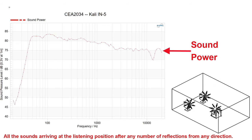The next line in the graphic is sound power. Sound power is all the sound radiated from the speaker in every single direction — 360 degrees horizontally around the speaker and 360 degrees above and below. The definition: all sounds arriving at the listening position after any number of reflections from any direction.